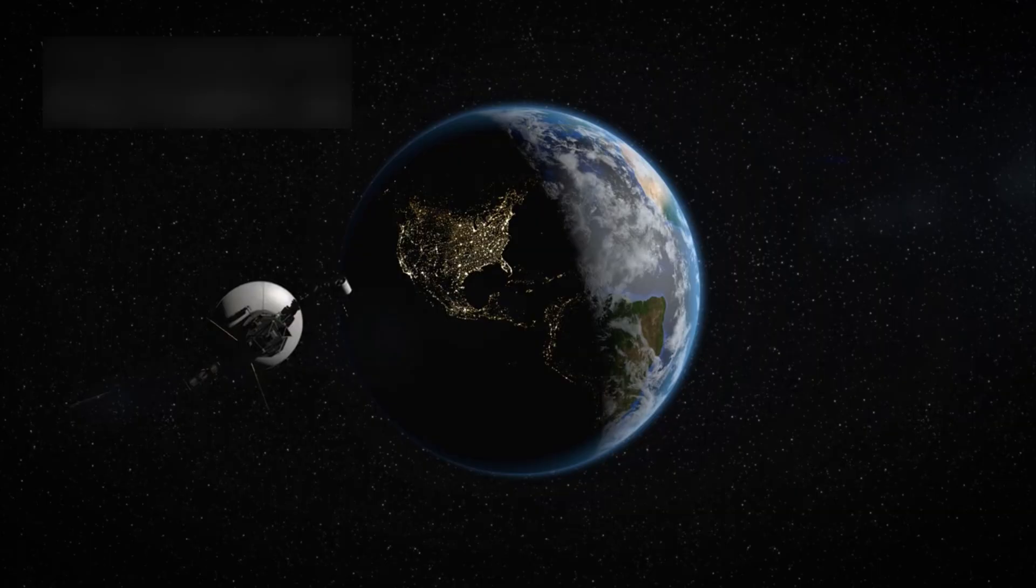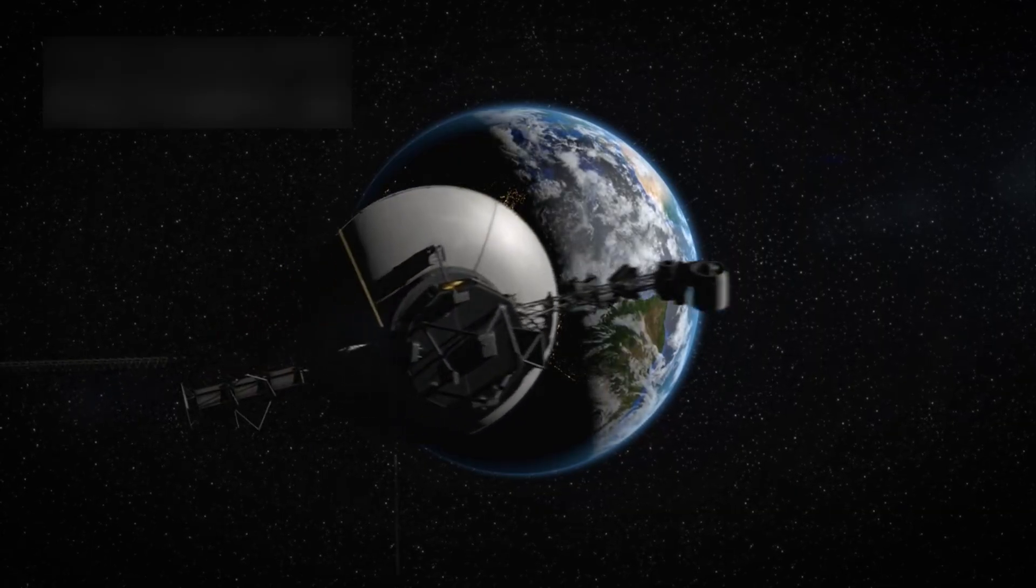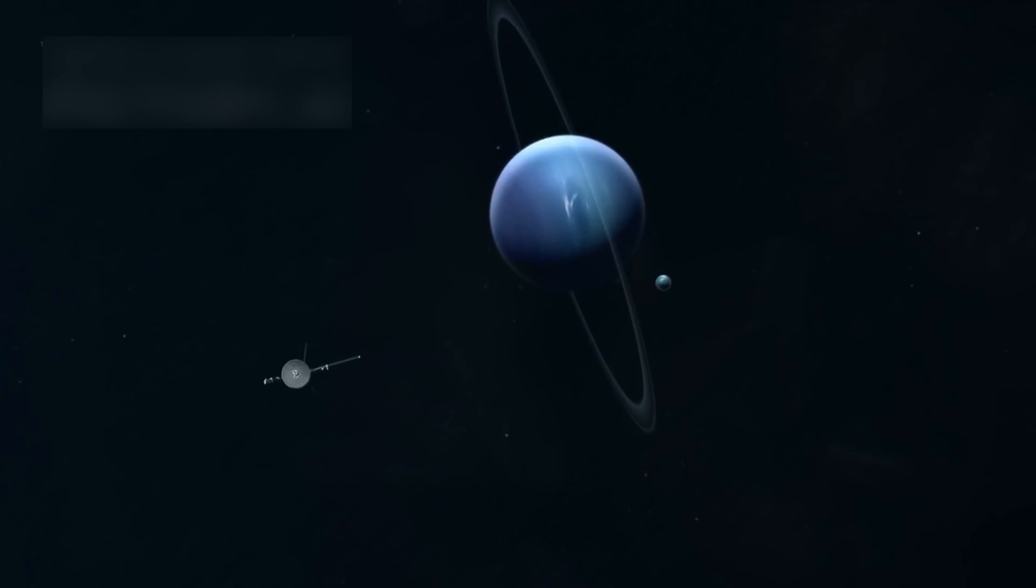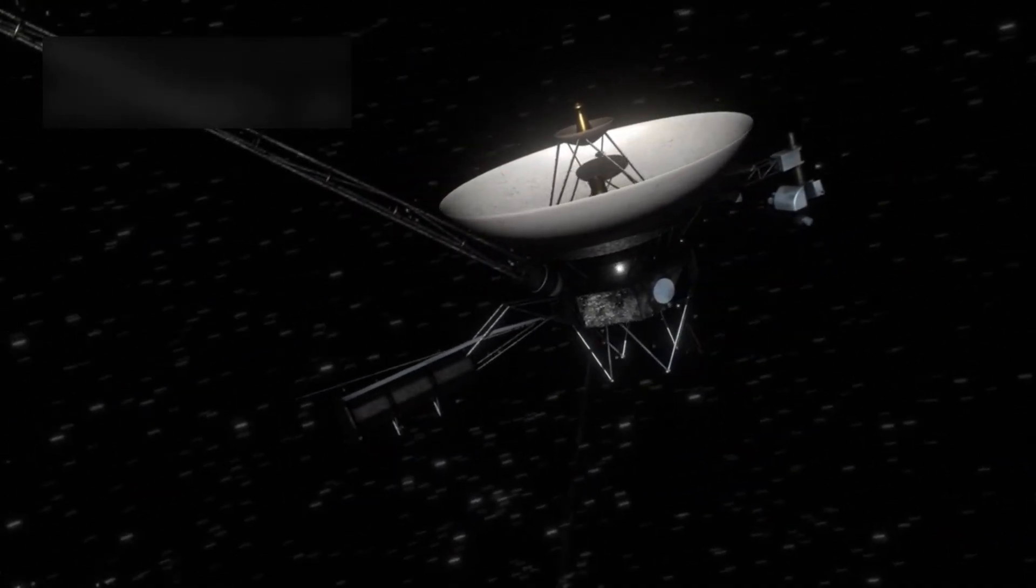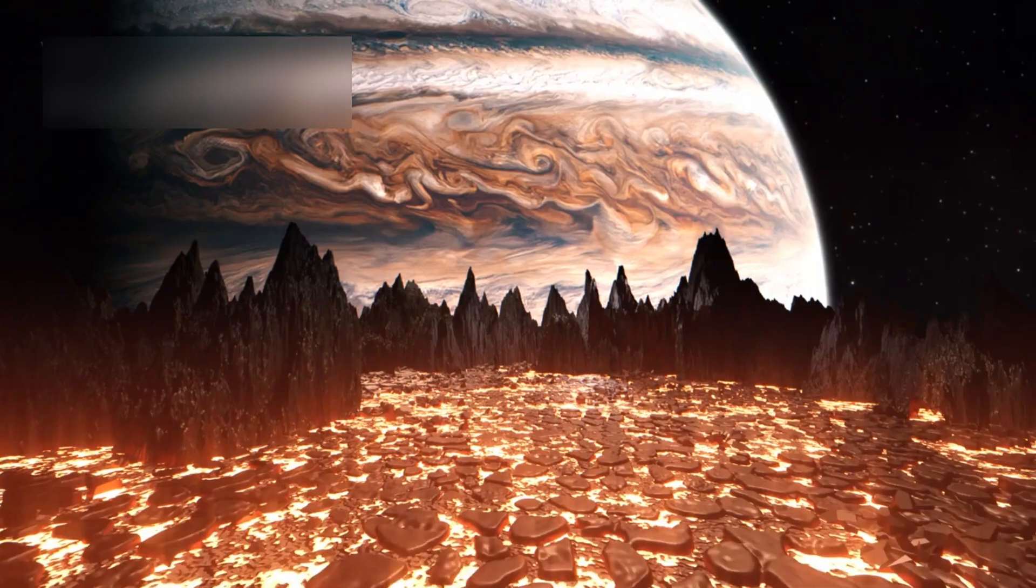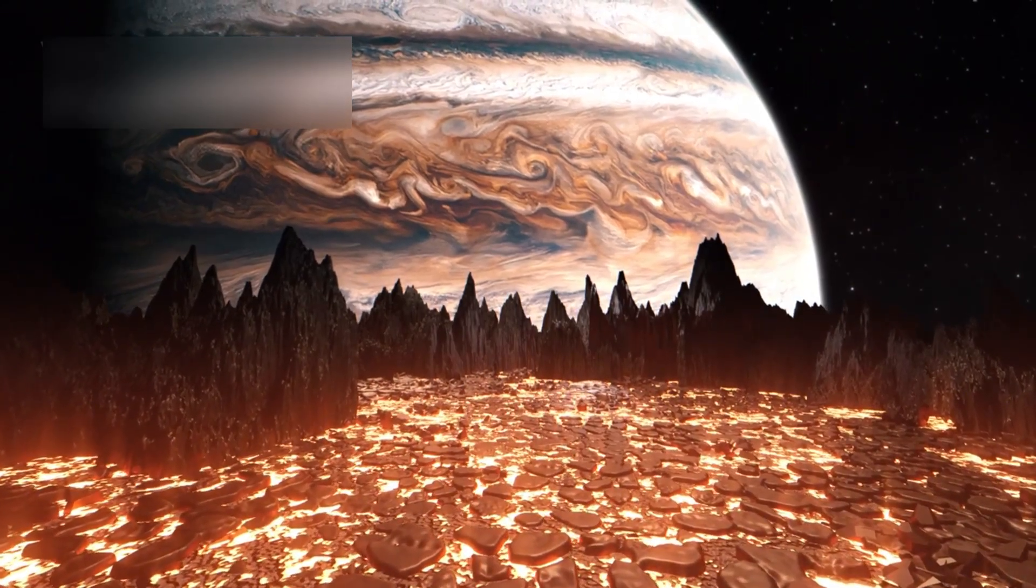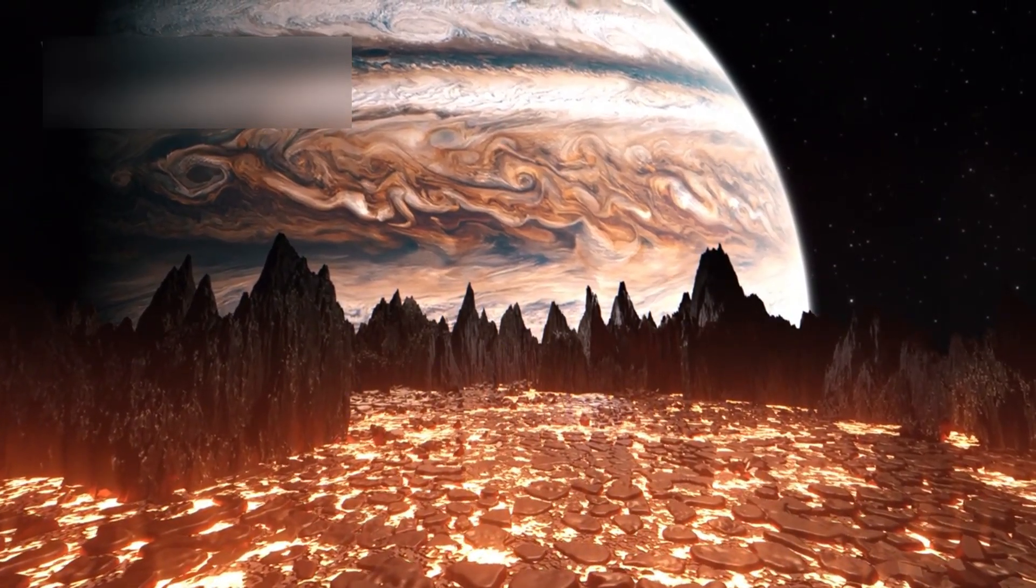Voyager 1, built with 1970s technology, went far beyond its original purpose. It became a pioneer, sending back stunning and detailed data of planets, their rings, and moons. Its close-up images of Jupiter's storms and Saturn's rings transformed how we see the outer solar system. It even discovered volcanic activity on Jupiter's moon Io, which was the first time active volcanoes were seen beyond Earth.